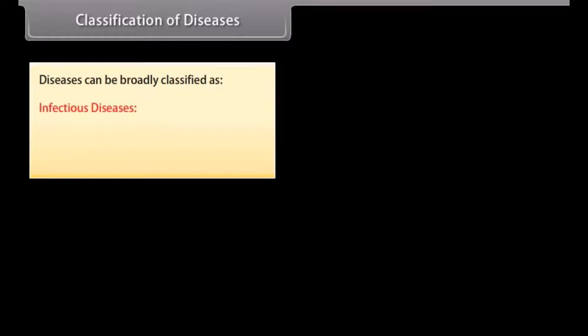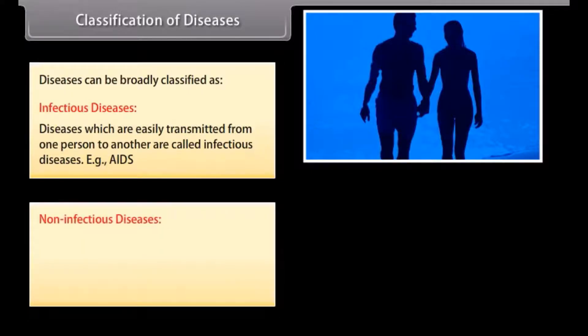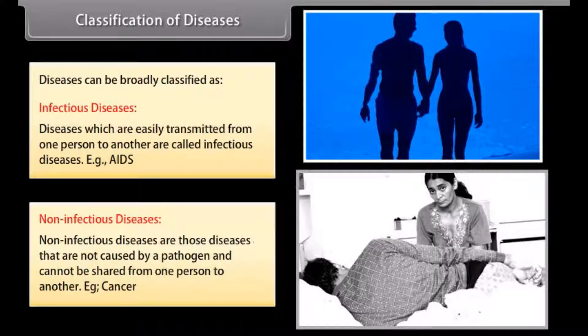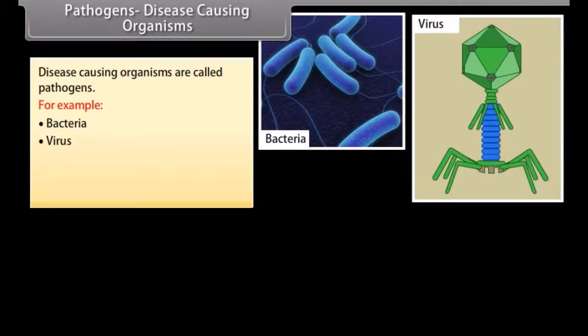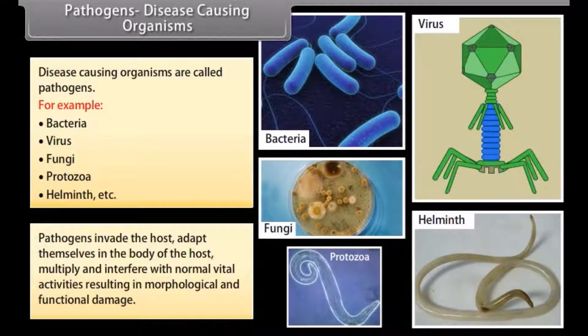Diseases can be broadly classified as infectious diseases — which are easily transmitted from one person to another, for example AIDS — and non-infectious diseases, which are not caused by a pathogen and cannot be shared from one person to another, for example cancer. Disease-causing organisms are called pathogens, such as bacteria, viruses, fungi, protozoans, and helminths. Pathogens invade the host, adapt in the body, multiply, and interfere with normal vital activities, resulting in morphological and functional damage.